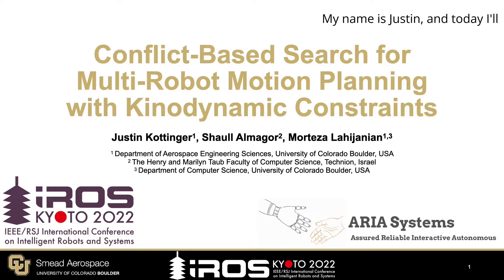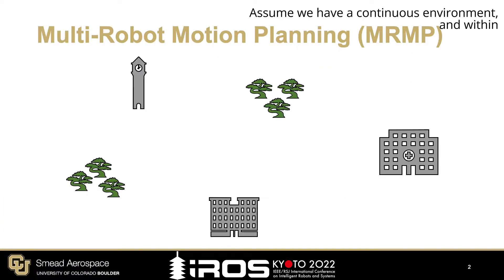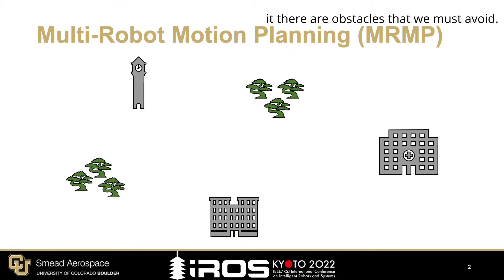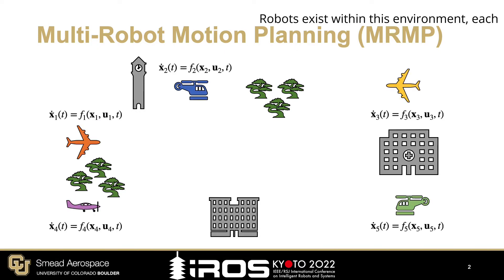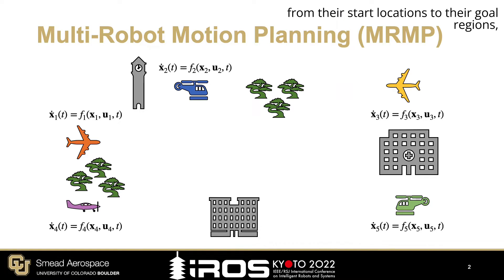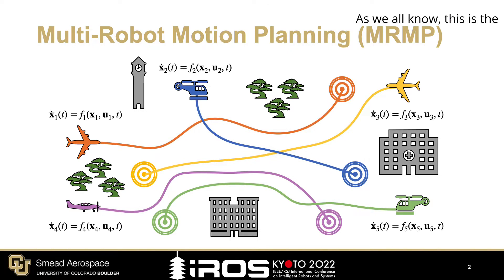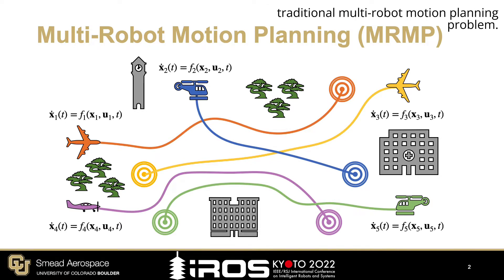Hey everyone, my name is Justin, and today I will be talking about our newest algorithm for solving the multi-robot motion planning problem. Let's assume we have a continuous environment, and within it there are obstacles that we must avoid. Multiple robots exist within this environment, each with its unique dynamic constraint. We would like to move all the robots from their start locations to their goal regions while avoiding collisions with obstacles and other robots. This is the traditional multi-robot motion planning problem.